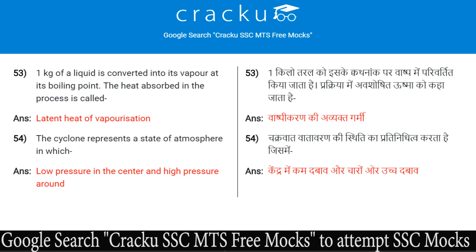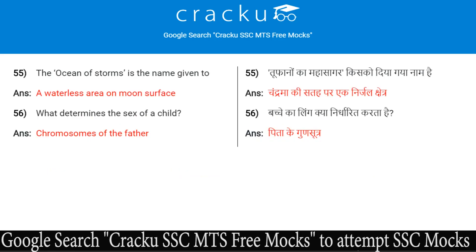The cyclone represents a state of atmosphere in which there is low pressure in the center and high pressure around it. The ocean of storms is the name given to a waterless area on the moon's surface.